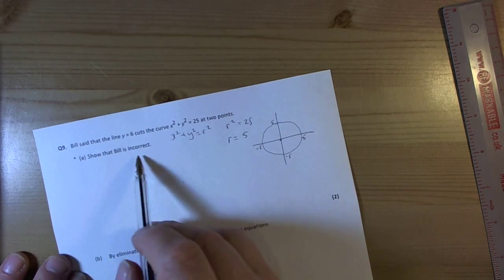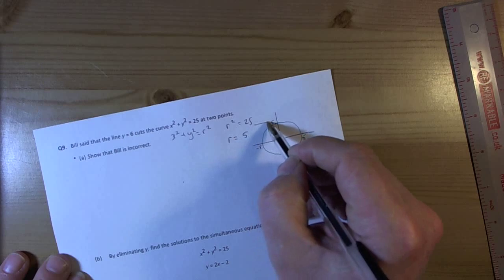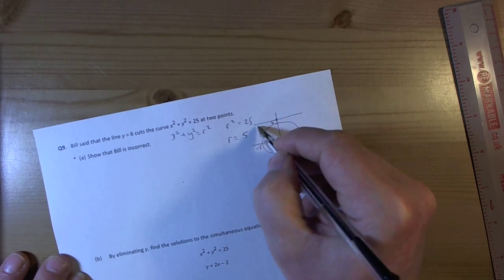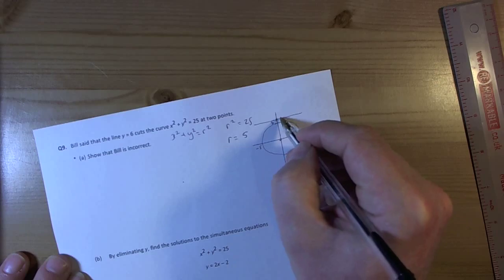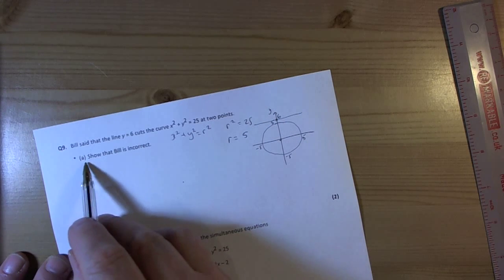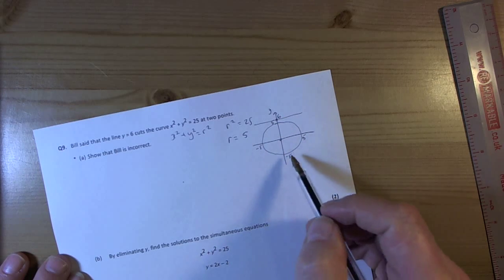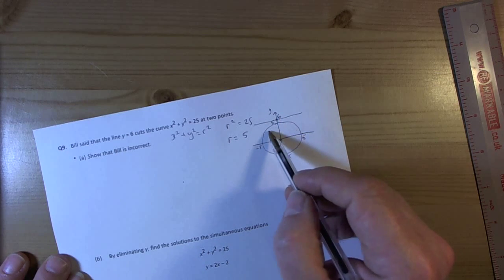So let's have a look at what's going on. So it says Bill said the line y equals 6. Well we know the line y equals 6 is horizontal. Every coordinate on here has a y part of 6, so it must cross the y axis at 6. So it says show that Bill is incorrect. Well we could sketch the picture, that's one way, and recognize that 6 doesn't cross the circle at all.